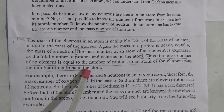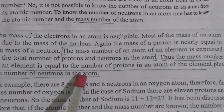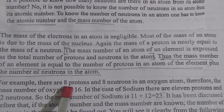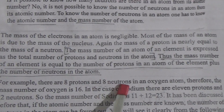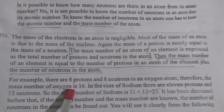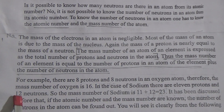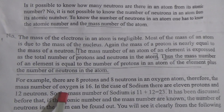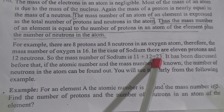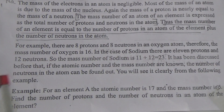That means if we add the number of protons and number of neutrons, we will get the mass number of the atom. For example, there are 8 protons and 8 neutrons in an oxygen atom, therefore the mass number of oxygen is 16. In the case of sodium, there are 11 protons and 12 neutrons, so the mass number of sodium will be 11 plus 12 equal to 23.